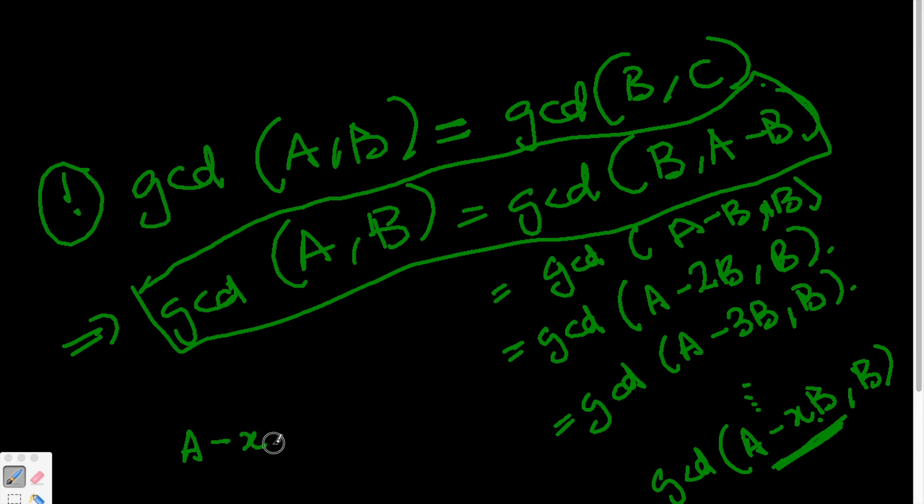So A minus x times B equals let's say R, which is the smallest possible number greater than zero, or rather say equal to zero.